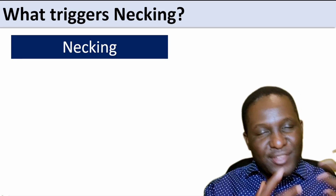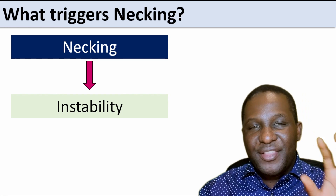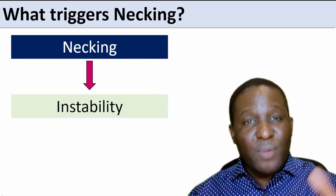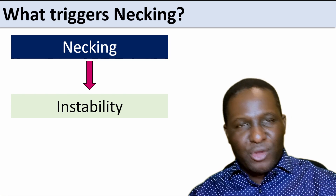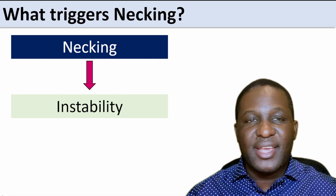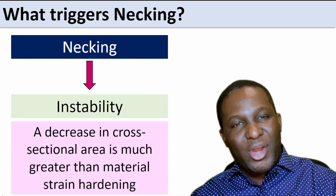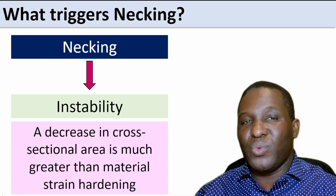What triggers necking? If we're going to design the experiment, we need to understand what is triggering necking so that we can recreate it. The first feature is that there has to be an instability within the material. Something has to be unstable in the way the material is behaving. The second thing is that there has to be a decrease in cross-sectional area, which would normally be greater than any strain happening in the material. When the cross-sectional area is smaller and the strain happening is bigger, then you can see necking.